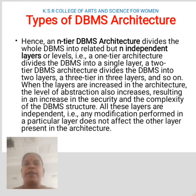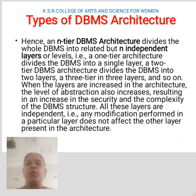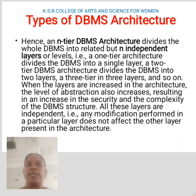Types of DBMS architecture: an entire DBMS architecture divides the whole DBMS into related but independent layers or levels. A one-tier architecture divides the DBMS into a single layer. A two-tier DBMS architecture divides the DBMS into two layers, a three-tier into three layers, and so on. When the layers increase, the level of abstraction also increases, resulting in an increase in the security and complexity of the DBMS structure.